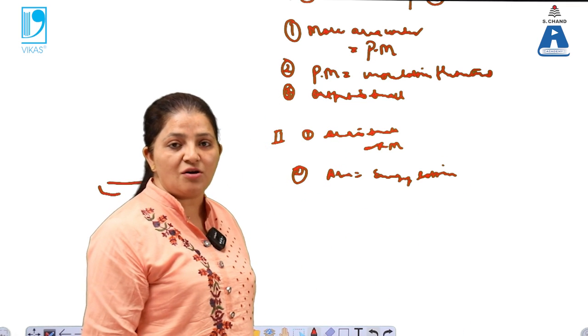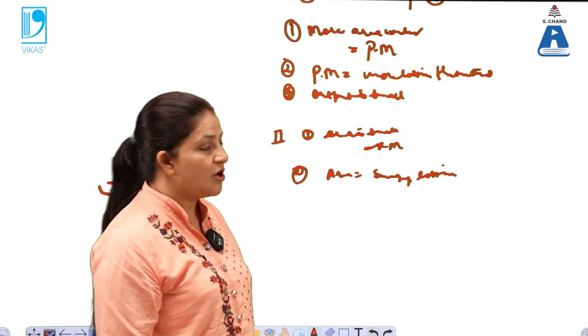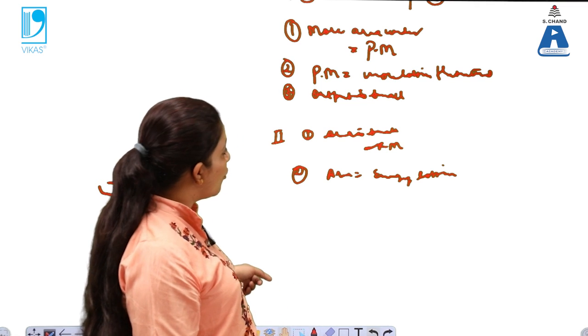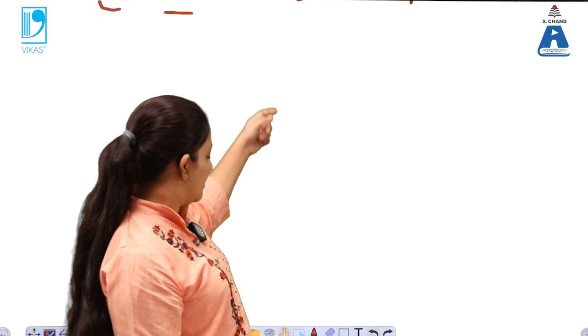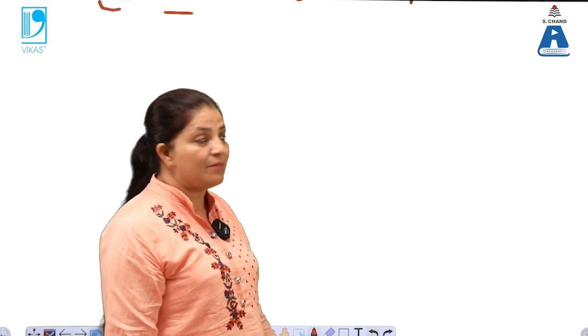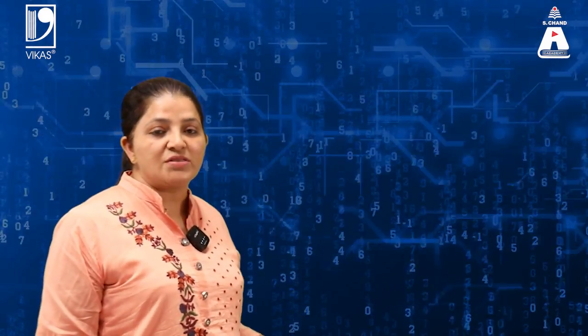If the energy loss is small, then automatically efficiency or output is very large. So in order to form the core of the transformer, we basically require very high efficiency and very high output. That is why the core of the transformer is made up of iron or copper, because they are ferromagnetic materials having very less loss and high efficiency.